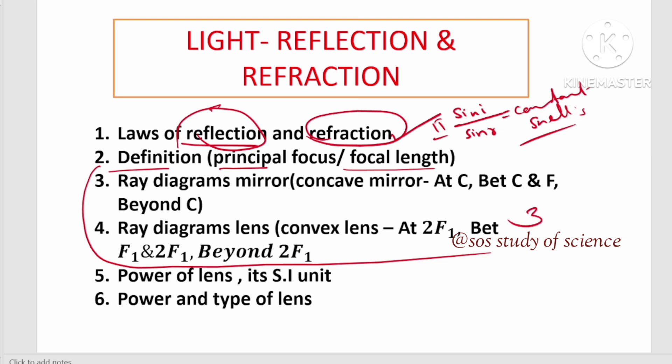I will go for a concave mirror. More cases to note. Object is kept at C, object is between C and F, object is beyond C. If we come for lens, convex lens, object is at 2F1, between 2F1 and F1, beyond 2F1. More cases, more case practice, chances are there.